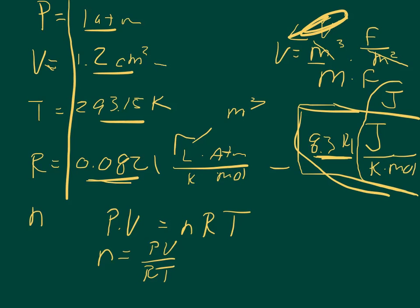But before we can do that, we have to convert our volume because the volume in the gas law constant is in liters. If we're going to use the gas law constant to cancel out, we have to have our volume in liters. 1.2 centimeters cubed is the same thing as milliliters, so if we divide this by 1,000, we get 0.0012 liters.